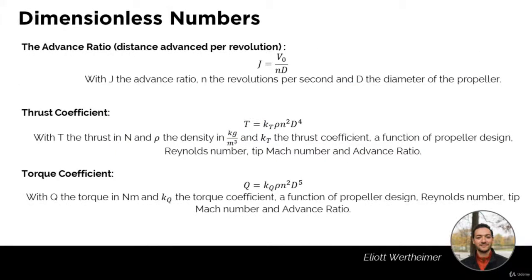From these equations, we can calculate dimensionless numbers used to design propellers or extract values very quickly from experimental data. Most propeller manufacturers provide these. First, the advance ratio J = V0 / (N × D), where N is revolutions per second and D is the propeller diameter in meters — it's the distance the propeller moves forward per revolution. Then the thrust coefficient KT is used in T = KT × rho × N² × D⁴, where KT is dimensionless and depends on propeller design, Reynolds number, blade tip Mach number, and advance ratio.